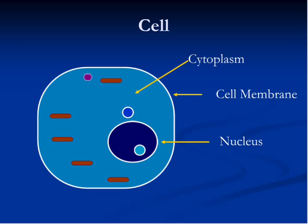Nucleus is the control center of a cell and is a necessary part of all cells. All human cells have nuclei with the exception of red blood cells and platelets. A nucleus most importantly consists of DNA and RNA, collectively known as nucleic acids.